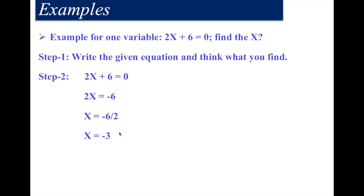To check if the answer is right or wrong, substitute the x value back into the equation. 2 times minus 3 equals minus 6, and minus 6 plus 6 equals 0. Our answer x equals minus 3 is satisfied. If you had said x equals 3, then 2 times 3 is 6, and 6 plus 6 is 12 — not 0 — so x equals plus 3 is the wrong answer. x equals minus 3 is the right answer. Always verify your problems.